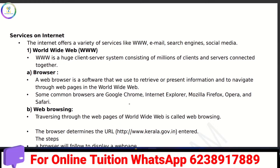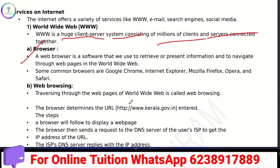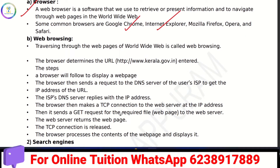The internet is a huge client-server system. Millions of clients and servers are connected. There is a browser — a web browser is a software that allows us to access information on all web pages. Examples include Google Chrome and Internet Explorer. This process of navigating web pages is called web browsing.